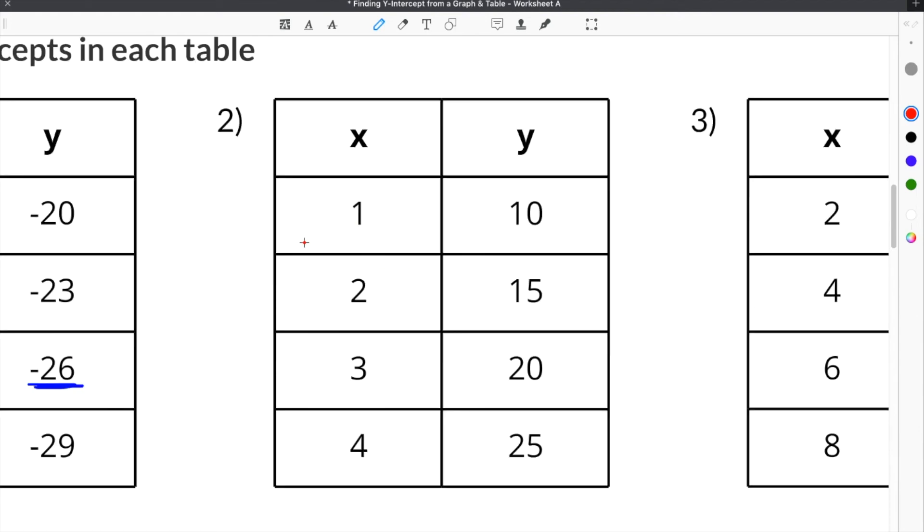However, sometimes they do not give you when x equals 0. So in order to find the y-intercept, we have to go backwards to when x equals 0. In the case of this example, we have to fill in the 0 in the x column. In order to do that, we have to work backwards.